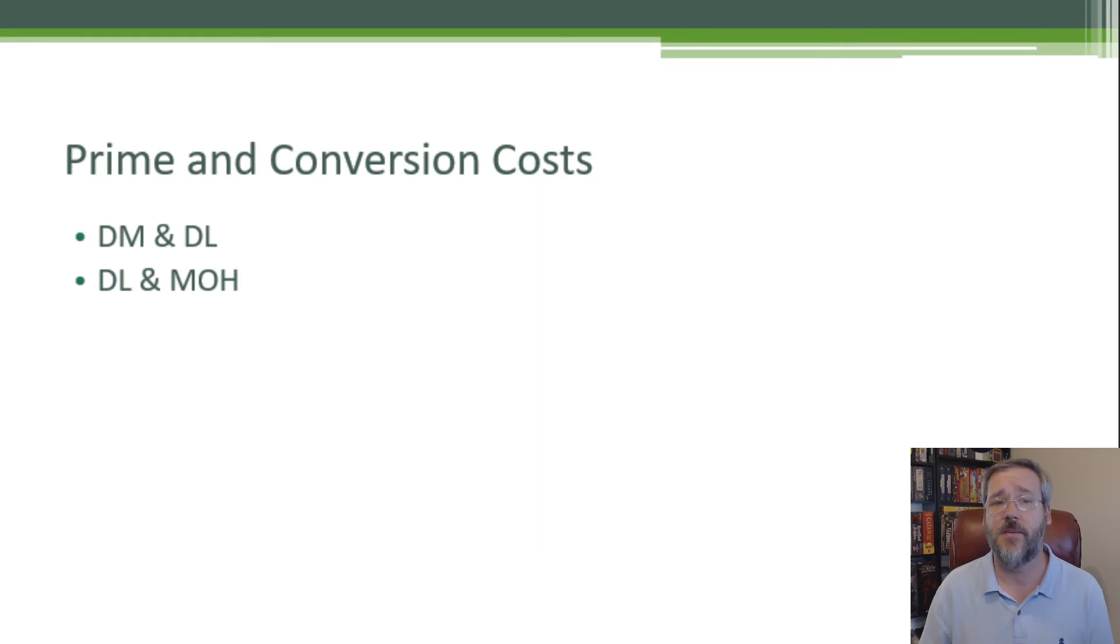One more quick point of terminology: prime and conversion costs. Direct materials and direct labor are types of prime costs. Direct materials are prime costs, direct labor can be a prime or a conversion cost. For the most part we're going to call it a conversion cost as well as manufacturing overhead. What we're talking about here is direct materials being a prime component. If we're putting together these little toy cars, we've got the direct materials of the body and the wheels. Our direct labor and our manufacturing overhead are applied to those raw materials, those direct materials, in order to convert it to a finished product.